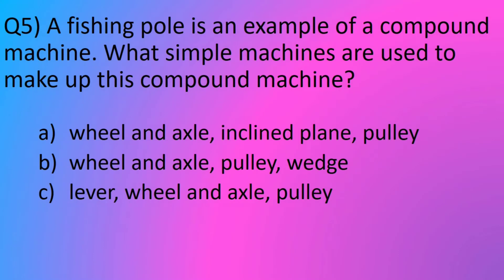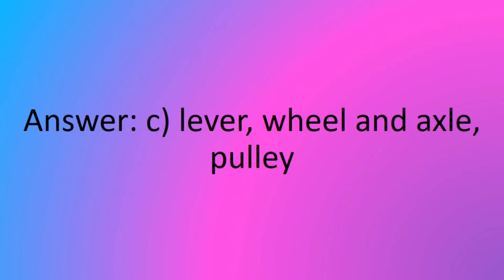Question number 5. A fishing pole is an example of a compound machine. What simple machines are used to make up this compound machine? Option A, wheel and axle, inclined plane and pulley. Option B, wheel and axle, pulley and wedge. Option C, lever, wheel and axle and pulley. The answer is option C, lever, wheel and axle and pulley.